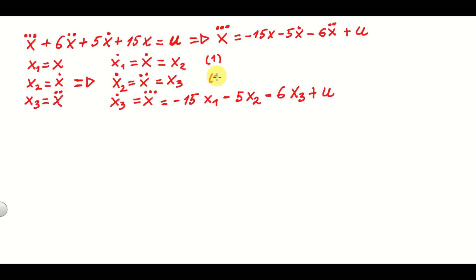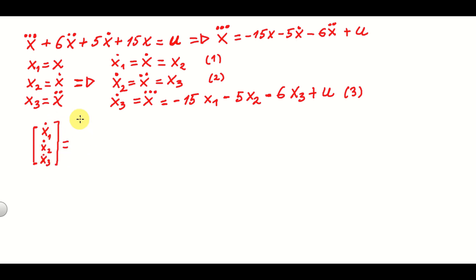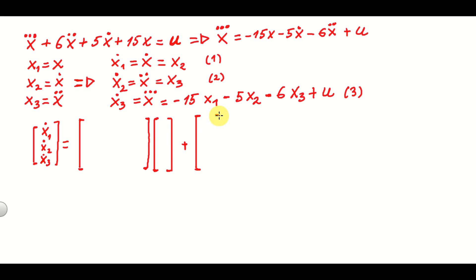Now that we have three state equations, we can group them and form our state-space model. The state derivative vector [x1-dot, x2-dot, x3-dot] equals a matrix multiplying the state vector [x1, x2, x3], plus another matrix multiplying the control input.